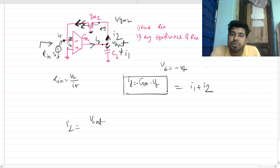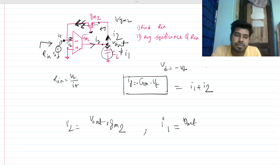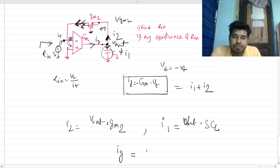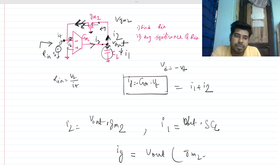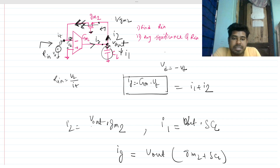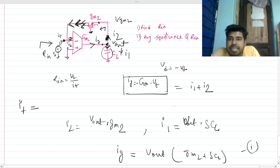So i2 will be nothing but V_out times gm2. And i1 will be V_out over the impedance of CL, which is 1/(sCL), so i1 = V_out * sCL. Now I can directly write that I_g equals V_out times (gm2 + sCL). Now what is your I_d — that matters here — this current will be i2 as well. And what is I_test? I_test will be such that this current is coming in the direction, so i2 will be negative of this.